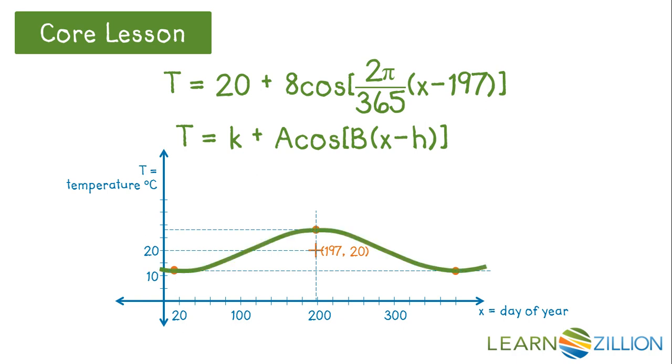This model represents a typical year in New Orleans. The graph could keep going in both directions to represent past and future. It is a model, so obviously the actual temperature won't be exactly these values.